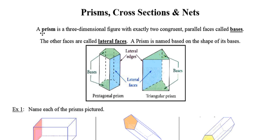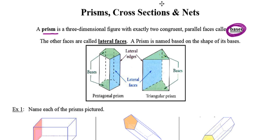You may recall from your middle school geometry that a prism is a three-dimensional figure with some kind of length, width, and height that has exactly two congruent parallel bases. The bases of any prism have to meet two requirements: they have to be both congruent and parallel. This is important because we're going to name all of our prisms based upon the shape that their base is in.